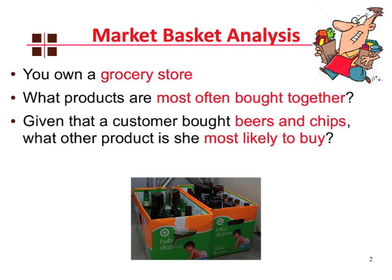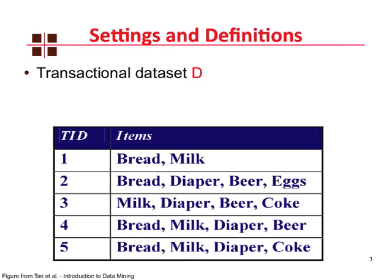Formally, we have a transactional dataset that we denote with the letter D, and it's built on transactions. Each of these lines is a transaction, and transactions are built on items — that is, the products that you sell in your grocery store. Sets of items are called itemsets.